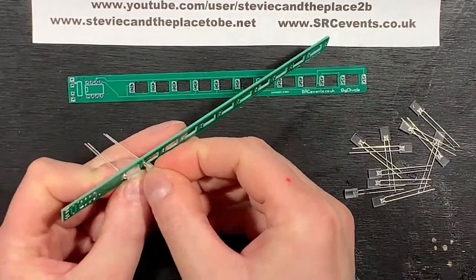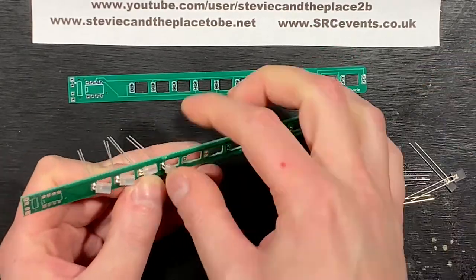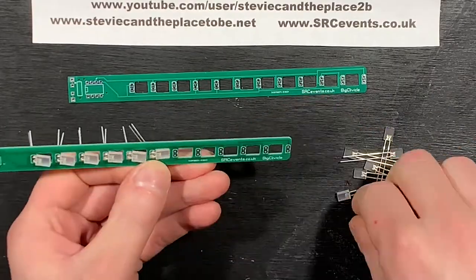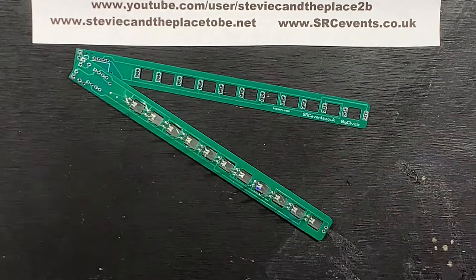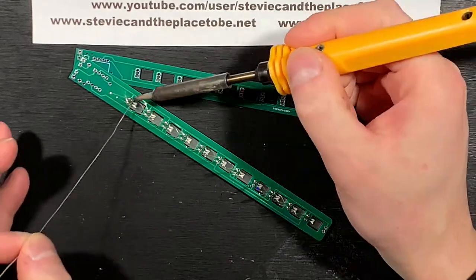First, I'm going to solder in the LEDs. This honestly doesn't take long because there's no fannying about with the enameled wire. I'm not pre-forming the LEDs, I'm just kind of waggling them into position. Let's go.